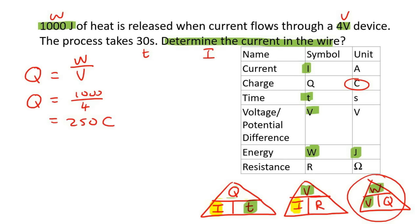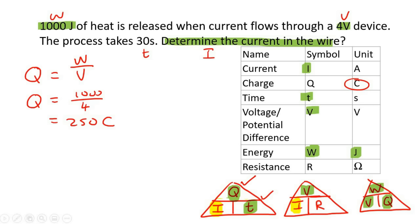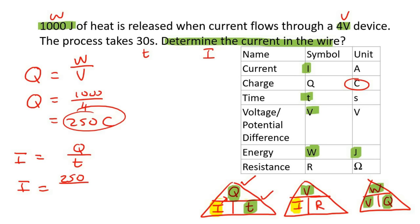Now we have Q. So now we can use the first triangle because both I and T are either known or calculable. We can say I is equal to Q over T — Q is now 250, divided by the time which is 30. That gives you 8.33 amps. How cool is this stuff! Once you get the triangles and understand these symbols and units, it becomes super fun.